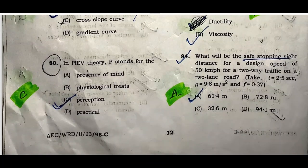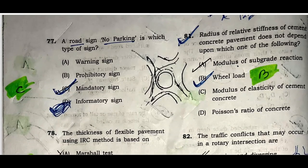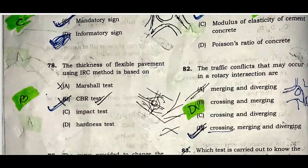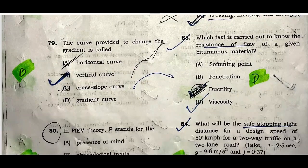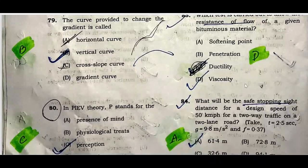Question eighty: In PIEV theory, P stands for perception. Option C is correct. Question eighty-one: The radius of relative stiffness of a cement concrete pavement does not depend on wheel load. Option B is correct. Question eighty-two: The traffic conflicts that may occur in rotary intersections are crossing, merging, and diverging. Option B is correct.